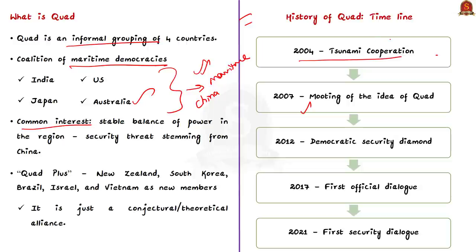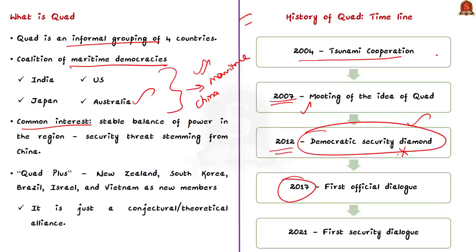The idea didn't take shape initially. It came to the fore again in 2012 under the name Democratic Security Diamond, but again didn't materialize. Only in 2017, the first official dialogue took place between India, Japan, Australia, and the United States in Manila, Philippines. We can say that Quad has evolved from a loose coalition of democracies to a concrete entity that has met thrice since 2019 at ministerial levels.